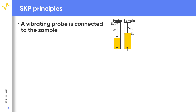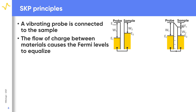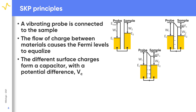What happens when you have two materials in direct electrical connection, as occurs through the probe and sample in the SKP measurement? This connection results in the flow of charge between the two. This causes their Fermi levels to equilibrate, forming a surface charge between them. The result of the surface charge is the formation of a capacitor with a contact potential difference Vc, also called the voltage potential.